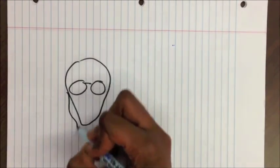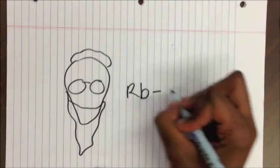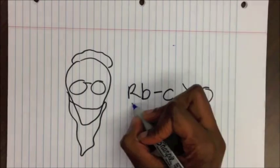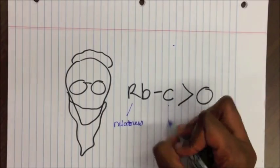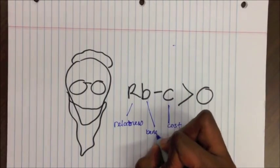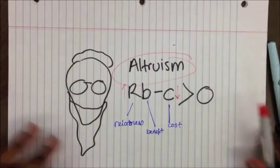This is known as Hamilton's rule, and it shows what is required for altruism to evolve. rb minus c is greater than zero, where r is relatedness, b is benefit to the recipient, and c is cost to the helper. If the relatedness is high and the cost to me is low, altruism is very likely to evolve.